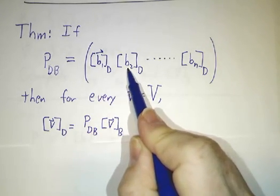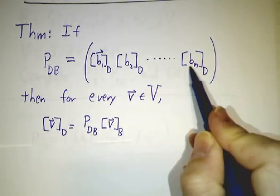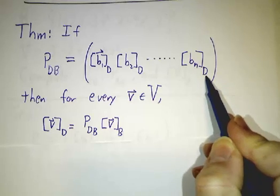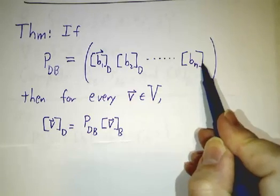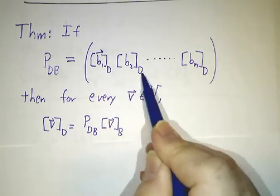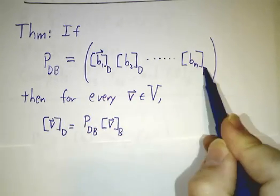Then we write the second b basis vector in the d basis, and all the way through the last b basis vector in the d basis. In other words, we take all of the vectors in the b basis and write down their coordinates in the d basis, put them side by side, and that's our magic matrix.